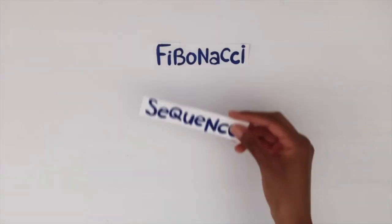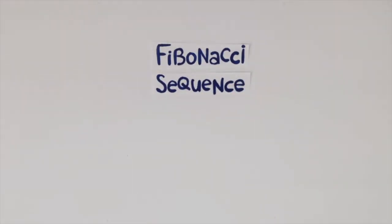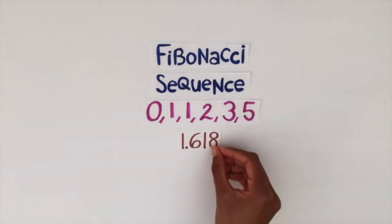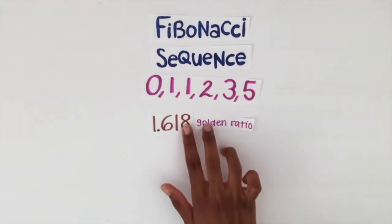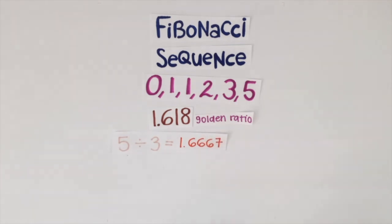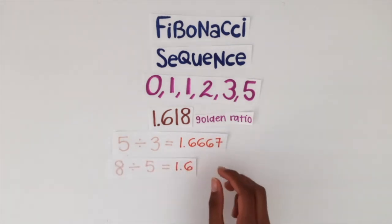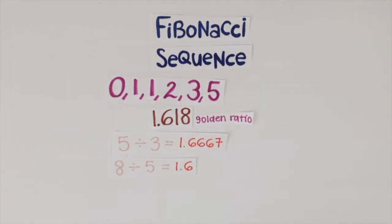You might still be thinking, why do we even need this sequence? Well, if you notice, dividing a term in the sequence by the one before gives you a number close to 1.618, something called the golden ratio in math. You can test this by dividing some of the terms, such as 5 and 3, 8 and 5, and 13 and 8.